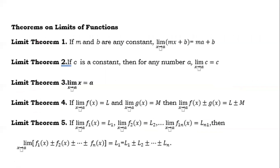Theorems on limits. Theorem one: if m and b are any constants, the limit of mx plus b — this is the slope-intercept form — as x approaches a is equal to ma plus b. You just substitute the value of a in the expression.